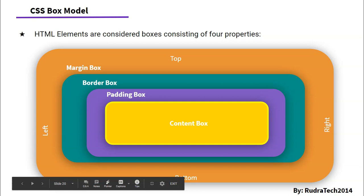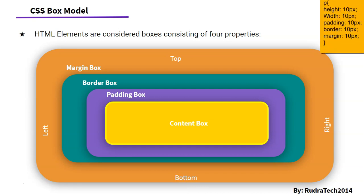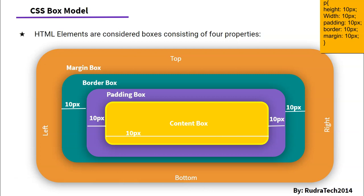So to calculate the total height of an HTML element — let's just say we have a paragraph element which has height as 10px, width as 10px, padding as 10px, border as 10px, and margin as 10px. In that case, the width of the HTML element will be calculated as 10px. The width of the padding box on the left and right side will be 20px. The width of the border box on the left and right side will be 20px. And the width of the margin box on the left and right side will be 20px. So the total width of our HTML element consisting of four boxes — content box, padding box, border box, and margin box — will be 70px.